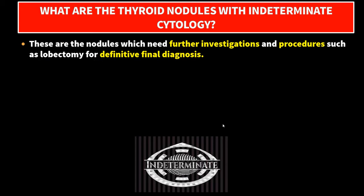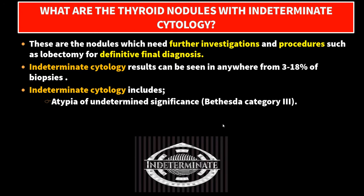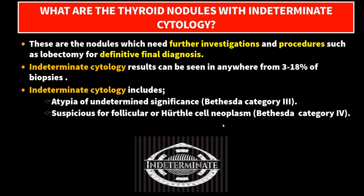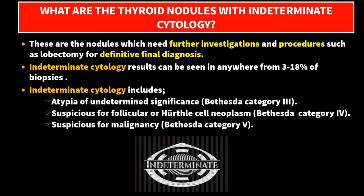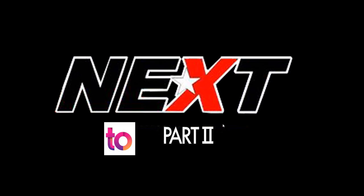What are the thyroid nodules with indeterminate cytology? These are nodules which need further investigations and procedures, such as a lobectomy for definitive final diagnosis. Indeterminate cytology results can be seen in anywhere from 3 to 18% of biopsies. Indeterminate cytology includes: atypia of undetermined significance (Bethesda category 3); suspicious for follicular or Hürthle cell neoplasm (Bethesda category 4); and suspicious for malignancy (Bethesda category 5). These are the references. We wait for part 2 for more details and specific scenarios. Thank you.